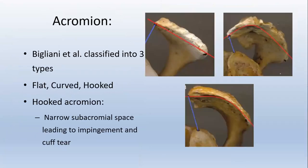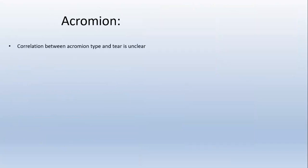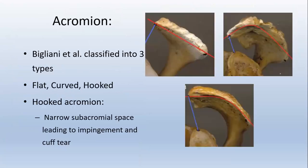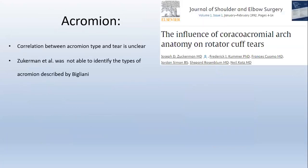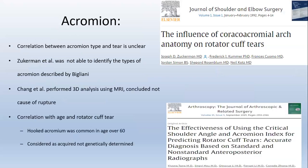The acromion is classified by Bigliani into three types: flat, curved, and hooked. In the hooked acromion, the narrow acromial space leads to impingement and cuff tear. However, the correlation between acromion type and tear is unclear. Zuckerman et al. was not able to identify the types in 140 cadaver studies as described by Bigliani. Chang performed a 3D analysis of MRI and concluded that acromion shape is not the cause of rupture. Correlation with age and rotator cuff tear was common in patients over 60 years and is considered acquired rather than genetically determined.